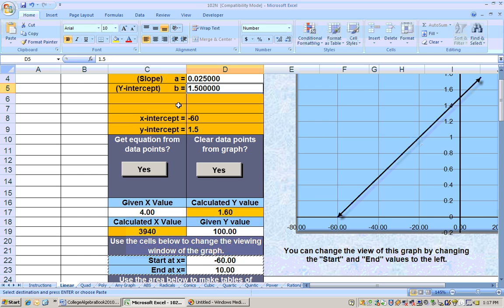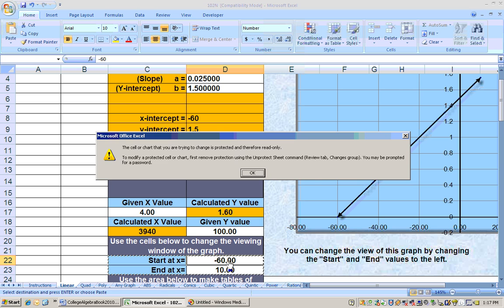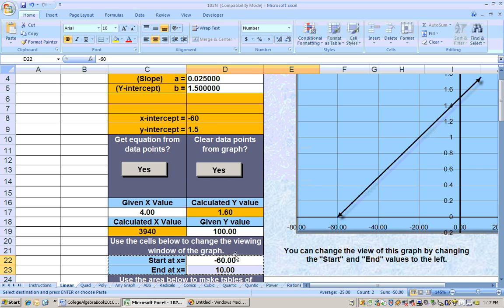Your graph may not look like this, but if you want to see the X and Y intercept, to see the Y intercept, make sure that 0 is within that range of values that we have here. Like mine goes from negative 60 to 10, and 0 is in there if you want to see the Y intercept. And I see that the X intercept is negative 60, so if I start the graph clear back at negative 60, I can do that if I want to.